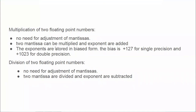The two mantissas can be multiplied and the exponents are added. When the exponents are stored in a biased form, the bias is 127 for single precision and 1023 for double precision. Division also has the same rule — no need for adjustment of mantissas — except that here the exponents are subtracted instead of added.